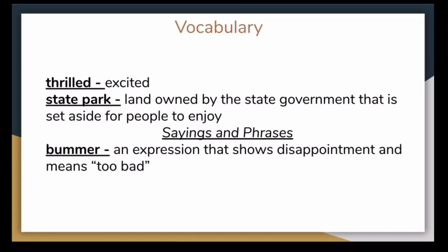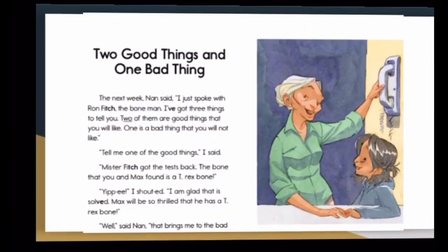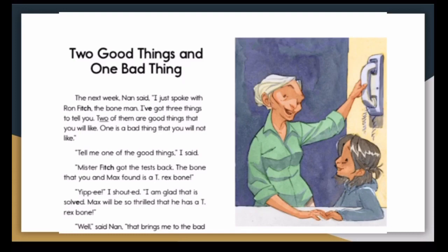State park. A land owned by the state government that is set aside for people to enjoy. For example, we went camping in the state park. Sayings and phrases. Bummer. An expression that shows disappointment and means too bad. For example, it was a bummer that it rained when we went to the park.